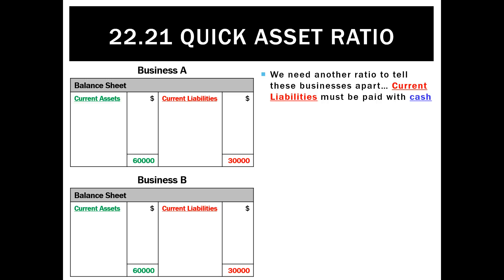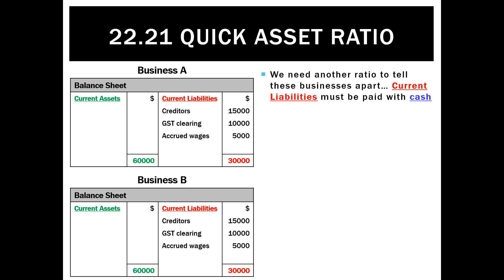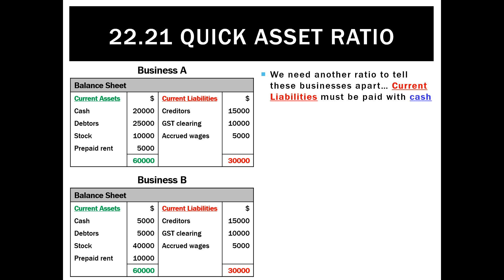We know the current liabilities have to be paid with cash. Their current liabilities are the same — they both have creditors, GST, and accrued wages for the exact same amount. But their current assets are a little bit different. Cash for business A is 20,000, for business B it's only 5,000. Debtors for business A is 25,000, but for business B it's only 5,000. Stock: business A has 10,000, but business B has 40,000. And prepaid rent for business A is 5,000, but for business B it's 10,000.